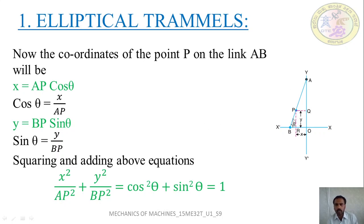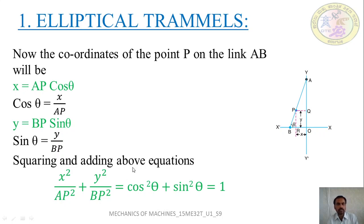As stated, the center point of bar AB always traces a circle. At the center point, BP = AP, so the equation becomes x²/AP² + y²/AP² = cos²θ + sin²θ, which simplifies to x² + y² = AP². This is the equation of a circle, confirming that the center point on the bar always traces a circle.